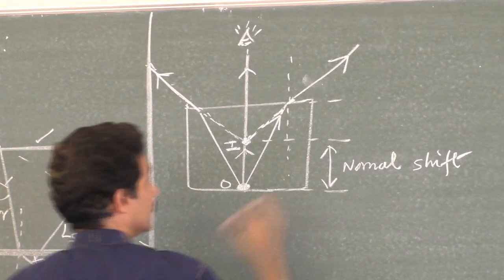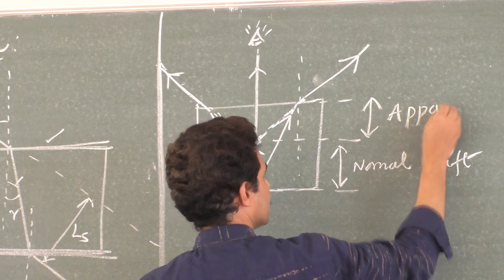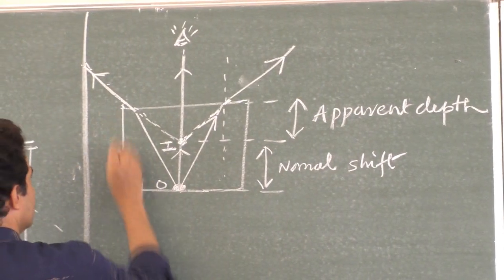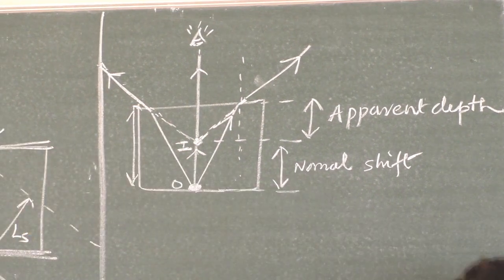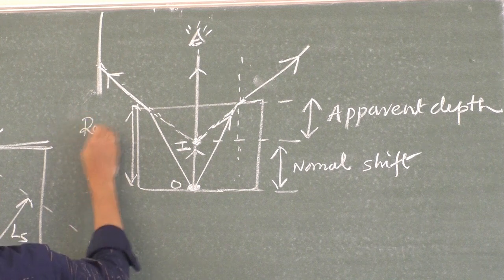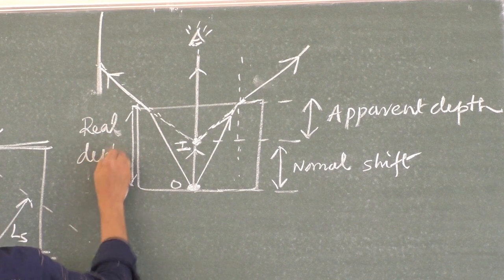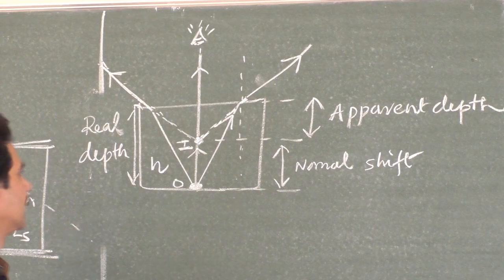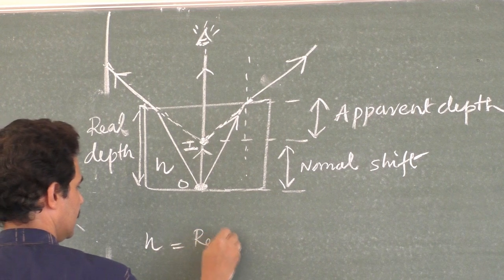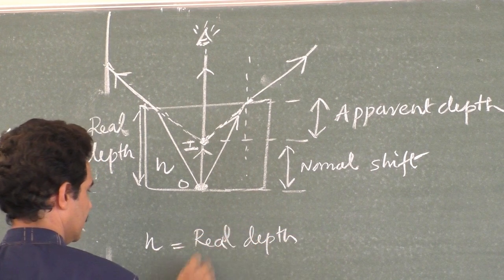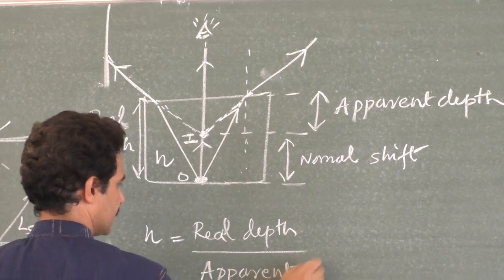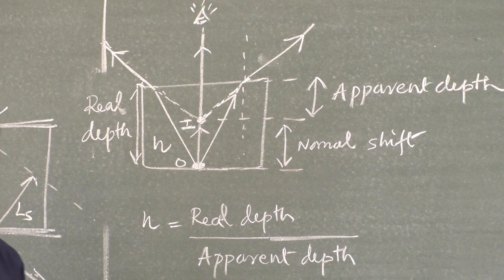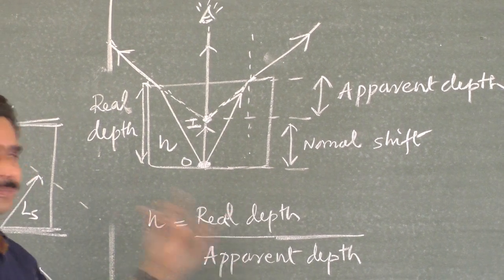The depth at which the object appears to be is the apparent depth — it is a feeling, not real. The actual depth is the real depth. The relation between refractive index of the medium with respect to air, real depth, and apparent depth gives us: refractive index = real depth / apparent depth. Refractive index has no unit since depth in meters cancels out.